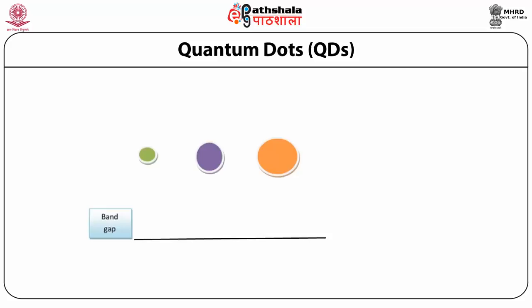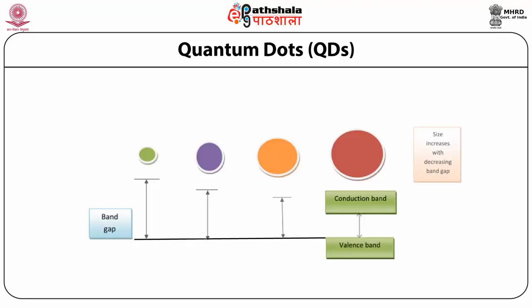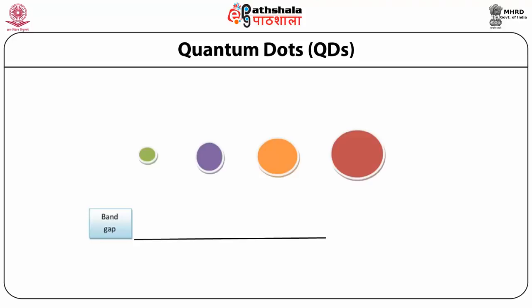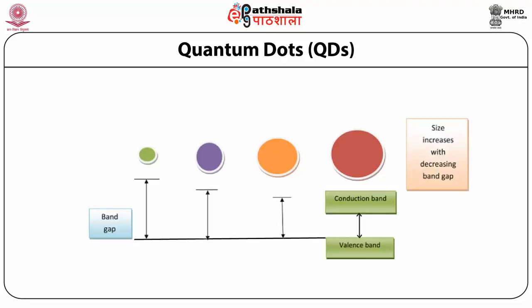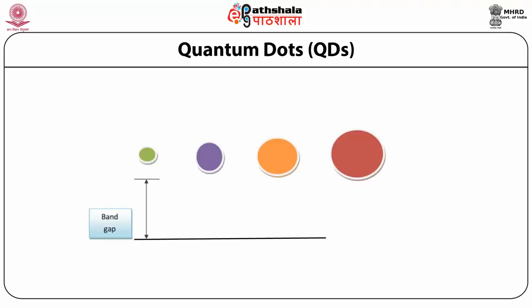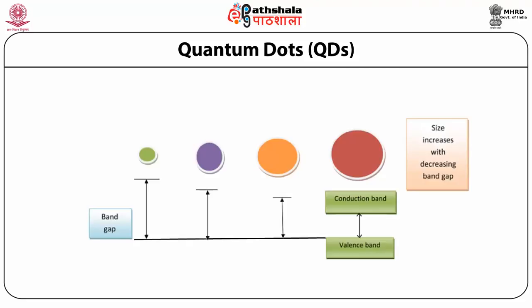The band gap is between the valence band and the conduction band. When you give energy to molecules, there is a transition of electrons from the valence band to the conduction band, and when the electrons return from the conduction band to the valence band, you get emission of specific light. As shown in the image, increasing the size decreases the band gap, and on this basis you can get different emission wavelengths.